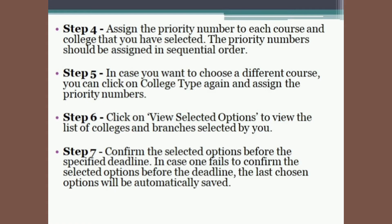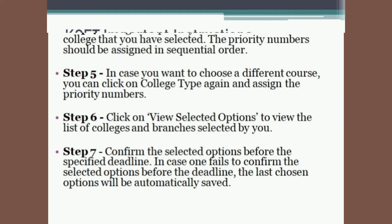In case you want to choose a different course, you can click on college type again and assign the priority numbers. Click on 'view selected options' to view the list of colleges and branches selected by you. Confirm the selected options before the specified deadline. In case one fails to confirm before the deadline, the last chosen options will be automatically saved.